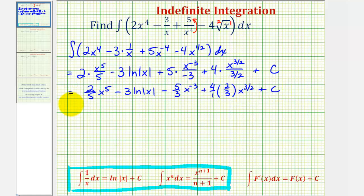Let's simplify one more time. We have two-fifths x to the fifth minus three natural log absolute value of x. Let's move this x to the negative three down to the denominator, so that the exponent would be positive three. So minus 5 divided by 3x to the third. This would be plus eight-thirds x to the three-halves plus C.